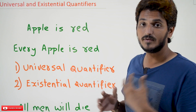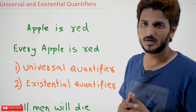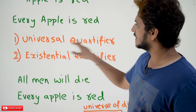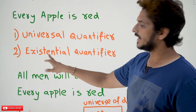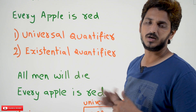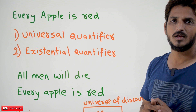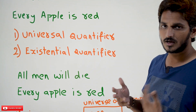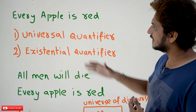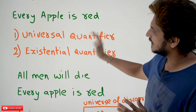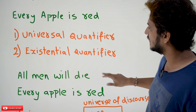In our examples we are having two types of quantifiers: universal quantifier and existential quantifier. We are going to understand both — universal and existential quantifier.